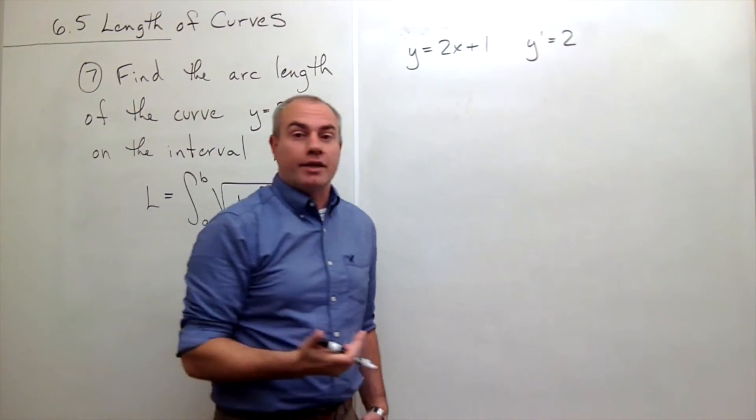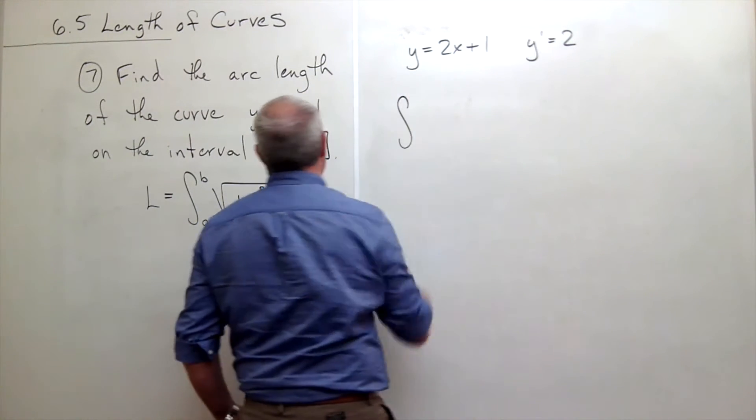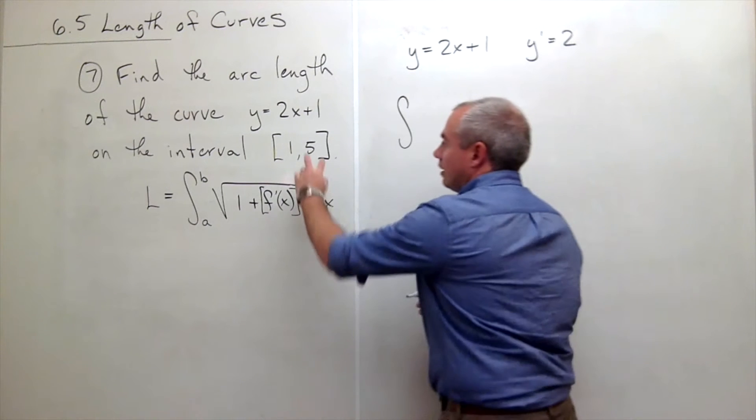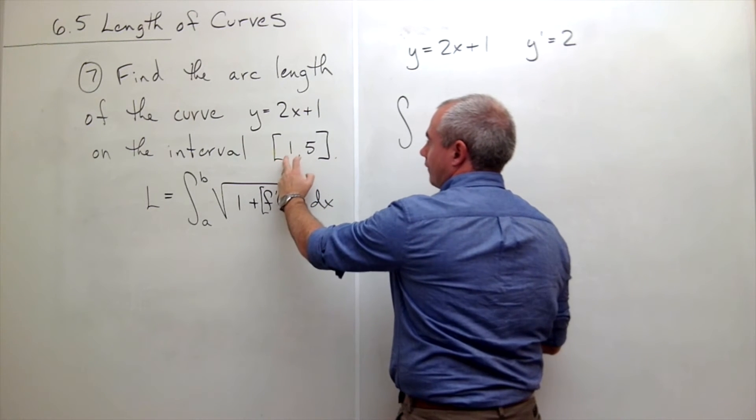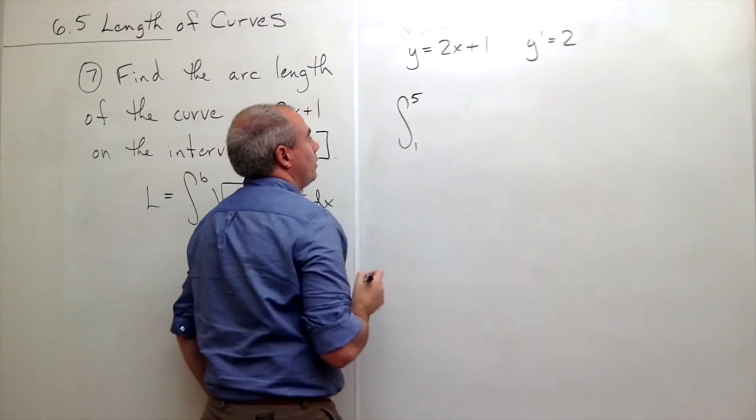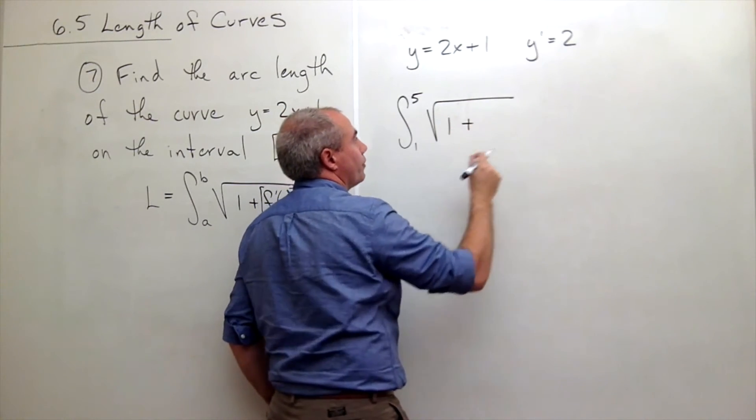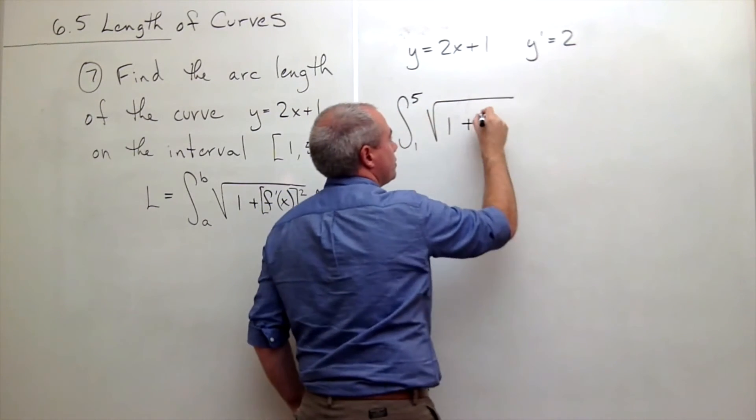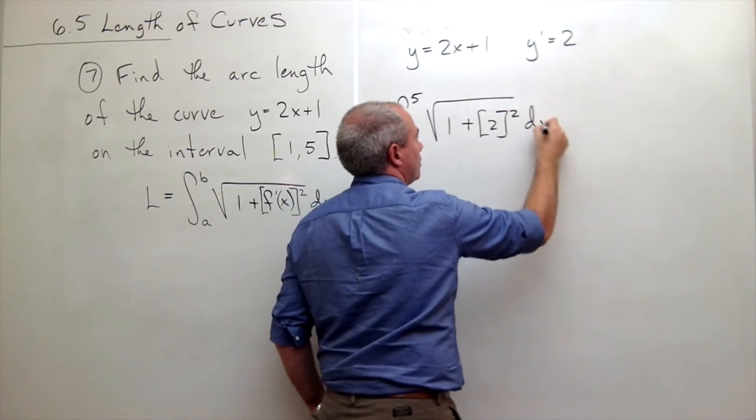If I want to find arc length, I need to integrate from some x value a to some x value b. I'm given the interval over which I want to integrate. I want to integrate from 1 to 5, so we're integrating from 1 to 5 of the square root of 1 plus the derivative, which we said was 2 squared dx.